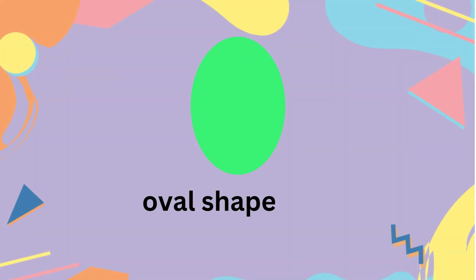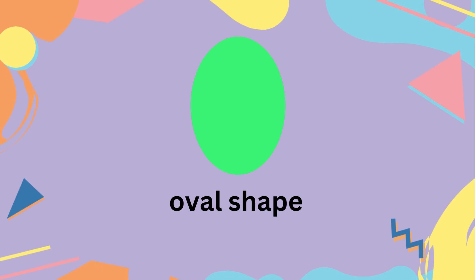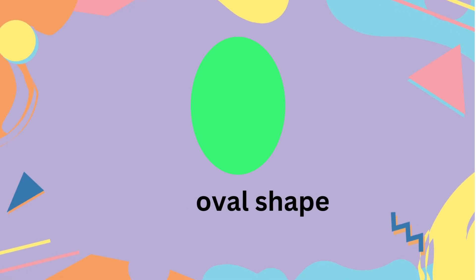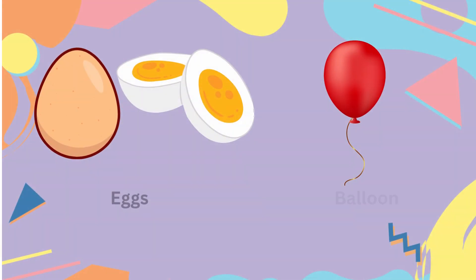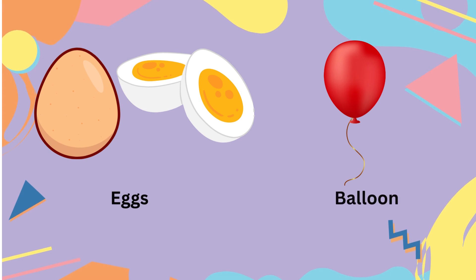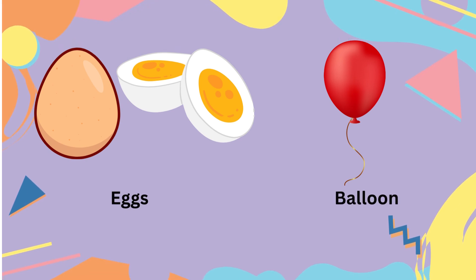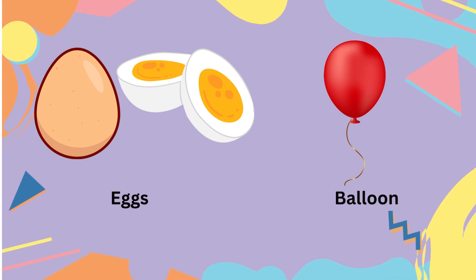It is an oval shape. Examples of an oval shape are an egg and a balloon.